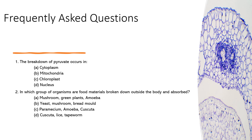Let's go to the second question. Let's delve into how various organisms obtain and process nutrients. Some absorb nutrients after breaking down food outside their bodies. Can you identify the group of organisms that follow this strategy? Yes, it's option B, including yeast, mushroom, and malt.